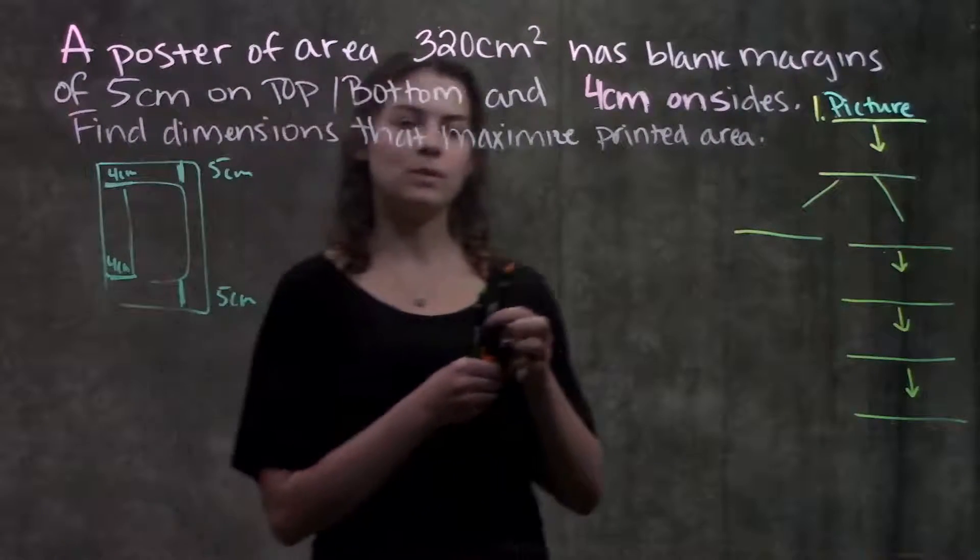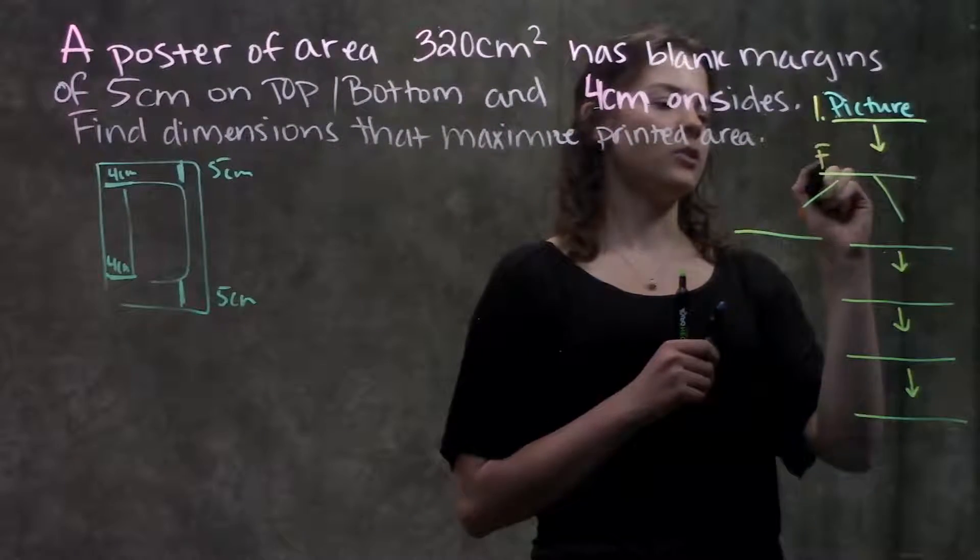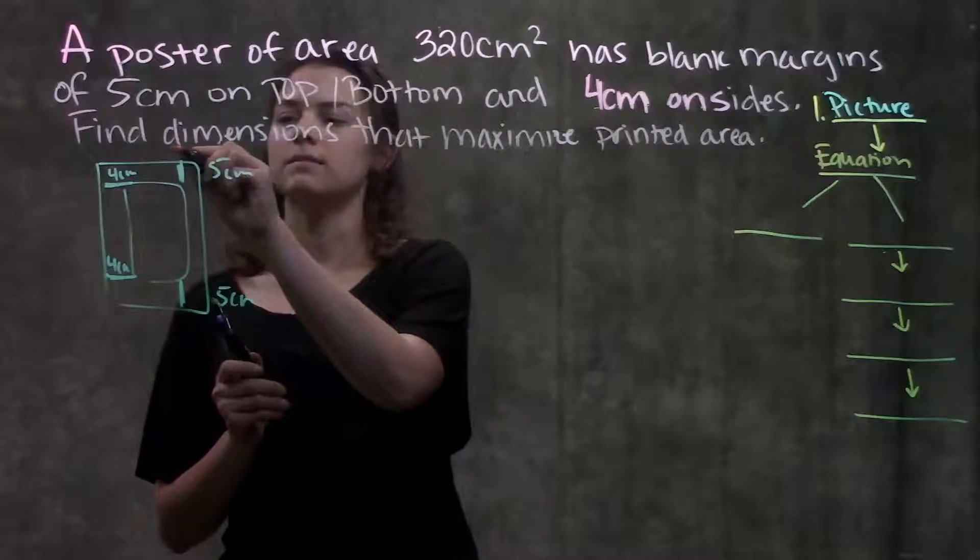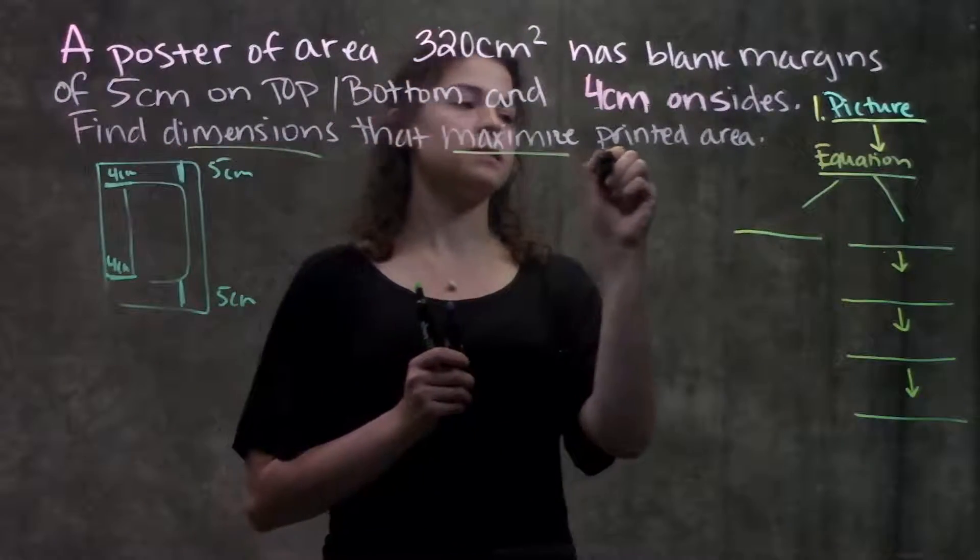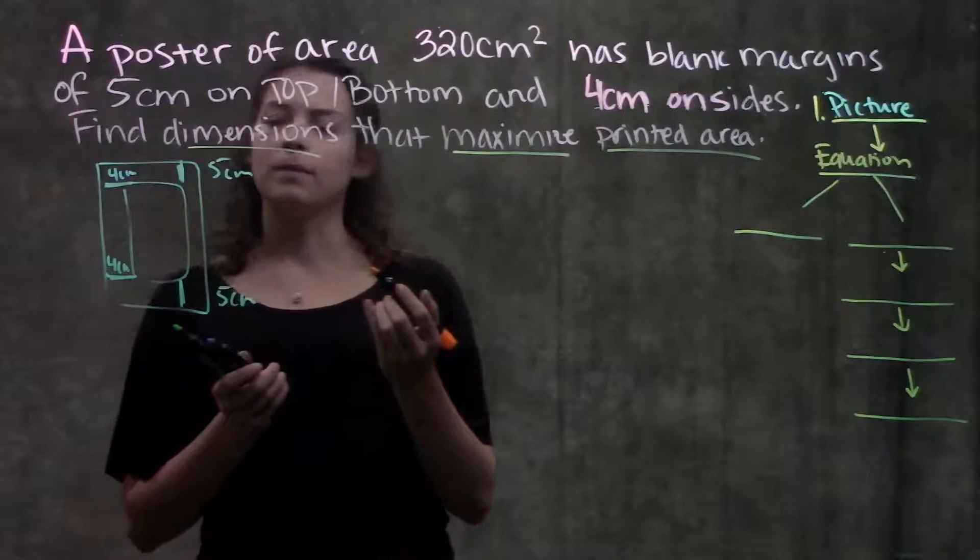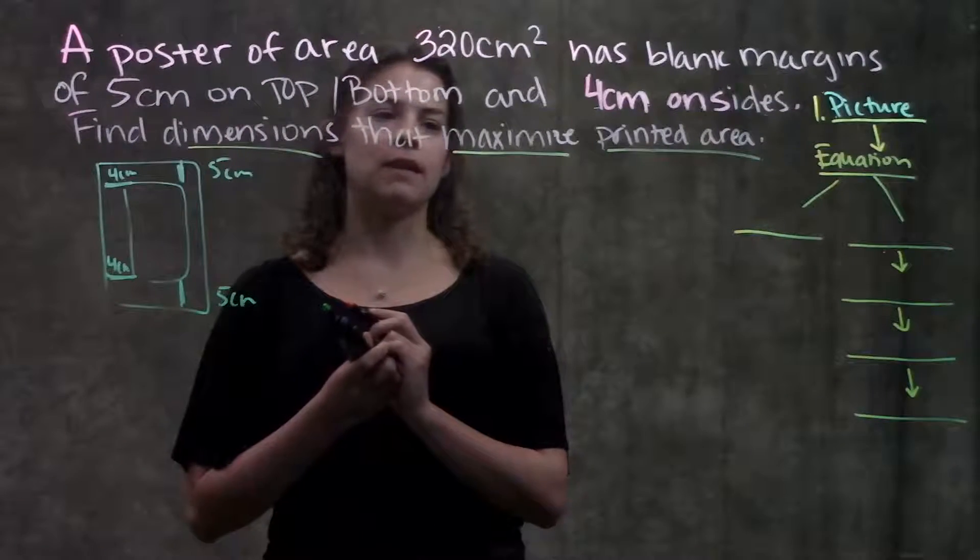So we drew our picture. Step 2 is we want to come up with equations. So remember, what are they actually asking us? They're asking us to find dimensions that maximize the printed area, that maximize this area here in the middle.